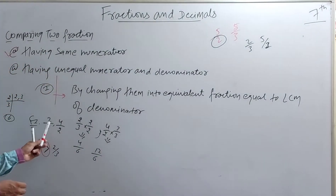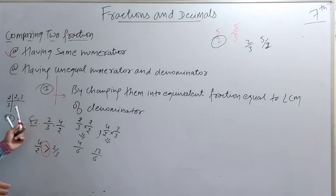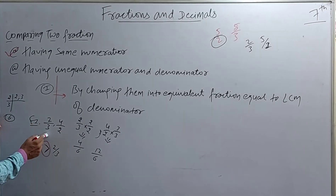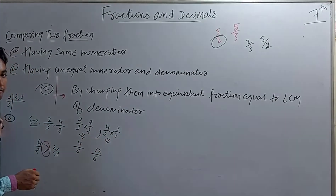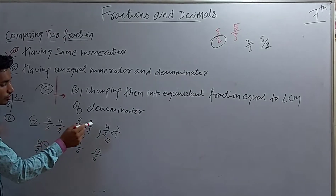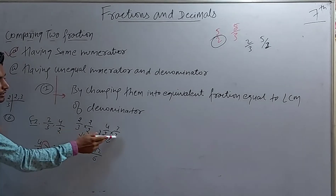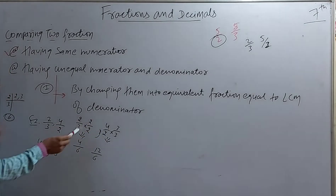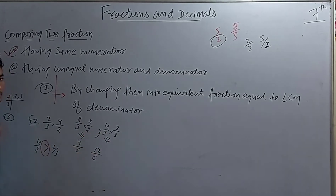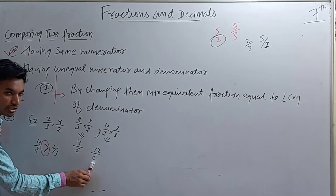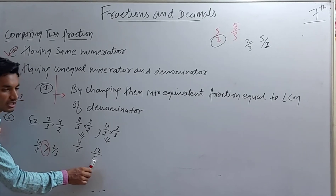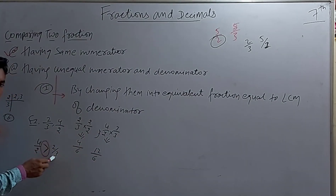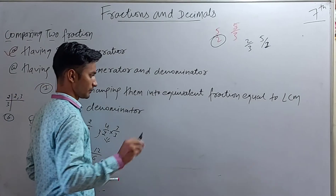We have already completed the first method. For 2/3 and 4/2, we take LCM of 2 and 3 to get 6. We convert 2/3 by multiplying with 2, and 4/2 by multiplying with 3. Finally we get 4/6 and 12/6. From this we observe that 4/2 is greater than 2/3.